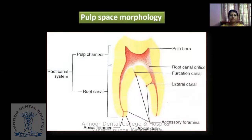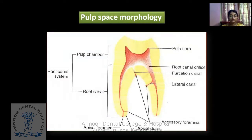Before talking about that, we'll discuss the morphology of the root canal system. It includes the pulp chamber and the root canal. The pulp chamber is in the coronal portion, whereas the root canal is towards the radicular portion. In the pulp chamber there are pulp horns, which are just below the cusps — so the number of cusps determines the number of pulp horns. Then there are root canal orifices, which are the entry into the root canal space. Furcation canals and accessory canals go towards the furcation area. Then lateral canals, apical foramen, and accessory foramen. The space in between is called the apical delta.